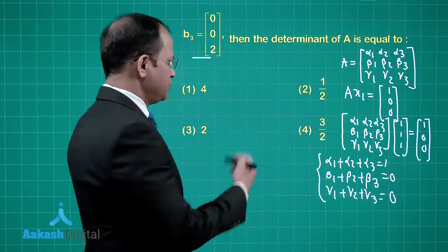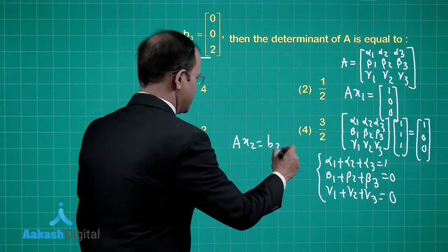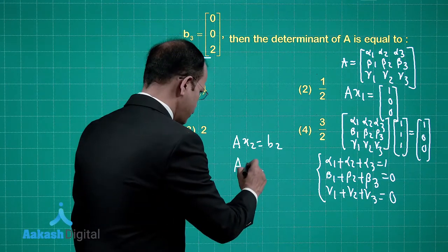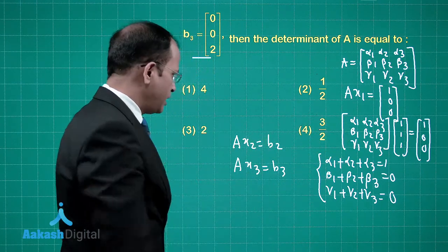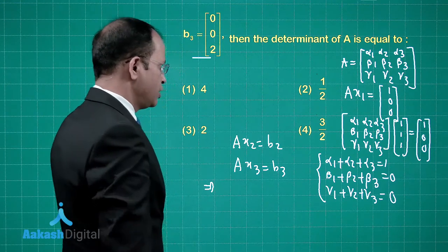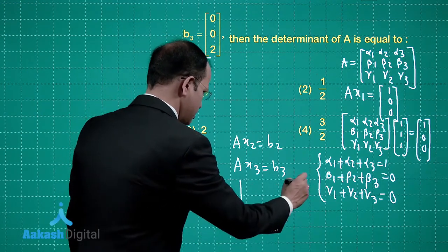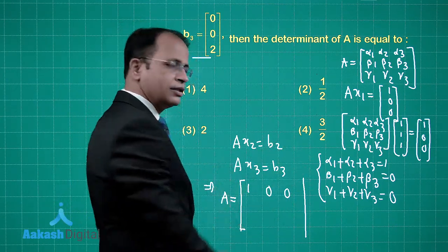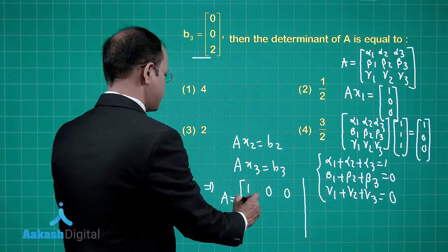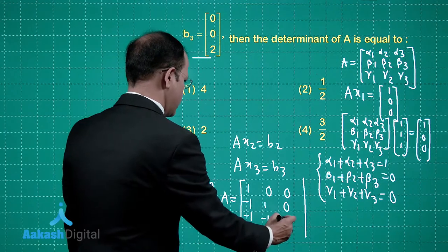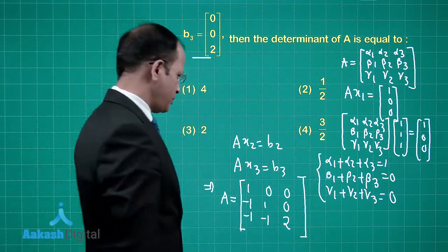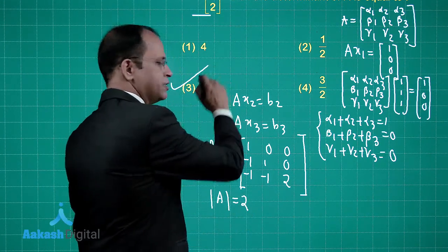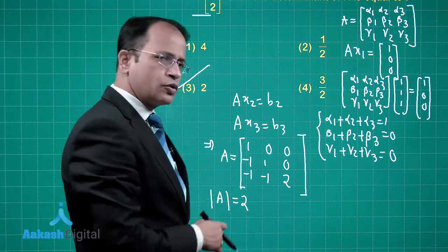Similarly, proceeding for Ax2 = b2 and Ax3 = b3, we get corresponding relations in terms of the alpha, beta, and gamma entries. Once all the calculations are done, the matrix A comes out to be: row 1: (1, 0, 0); row 2: (minus 1, 1, 0); row 3: (minus 1, minus 1, 2). The determinant of A is therefore 2.